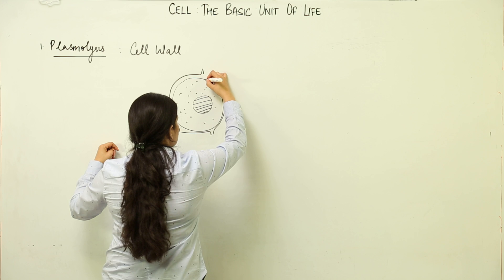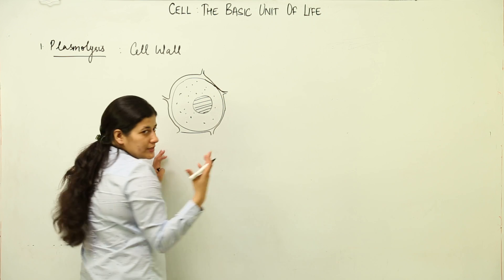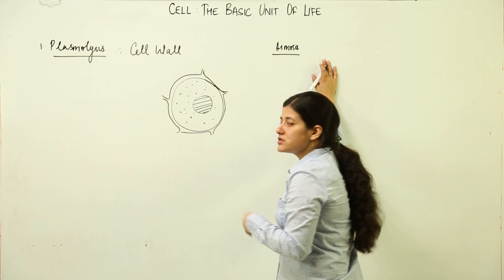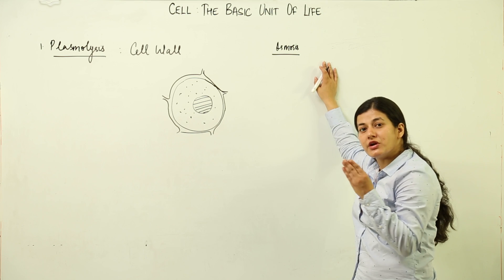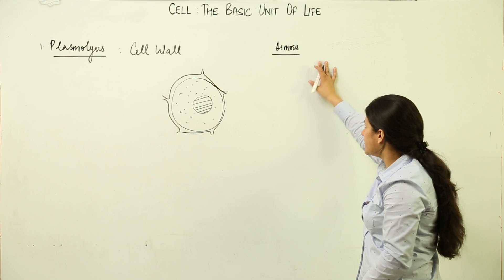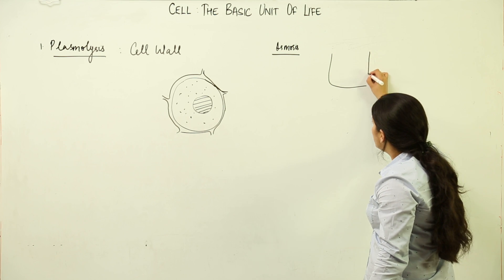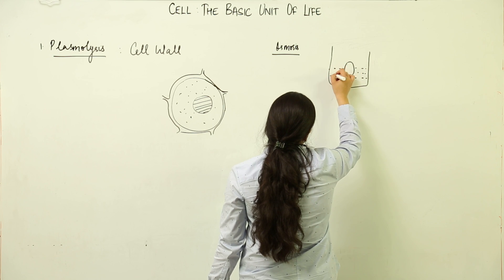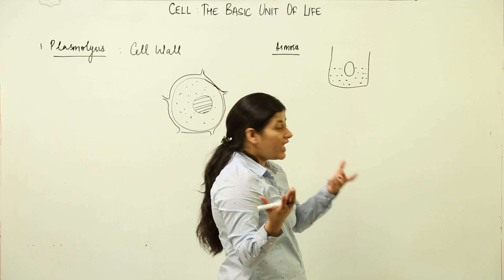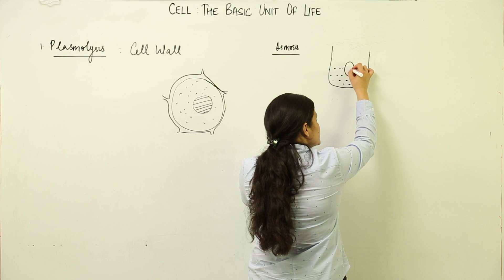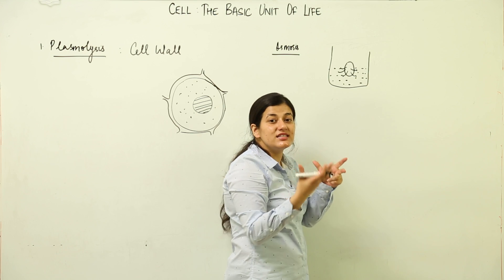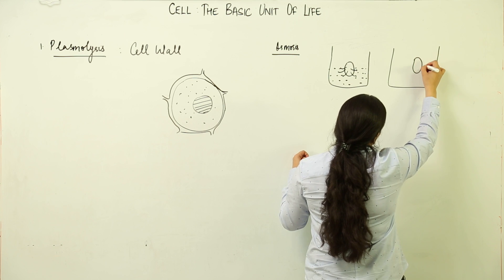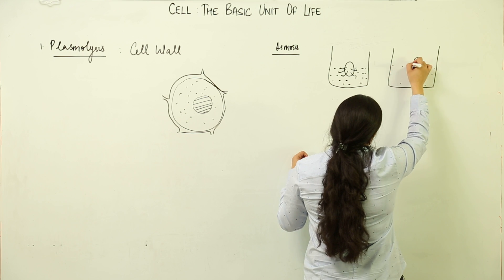We had talked about osmosis earlier. Osmosis is the condition where, whenever there is a higher concentration of solution, the water — or the solvent — rushes towards it. For example, in the egg activity, we kept a shell-less egg inside a highly concentrated solution — more concentrated than the egg itself. What happened is that the water present inside the egg came out towards that concentrated solution.